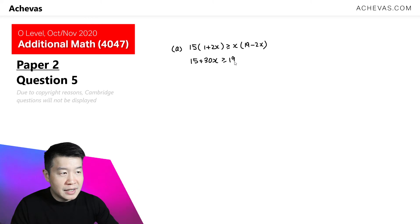This is bigger or equal to, on the right hand side, 19x minus 2x squared. Shifting everything back to the left hand side, minus 2x squared, we will have a 2x squared.